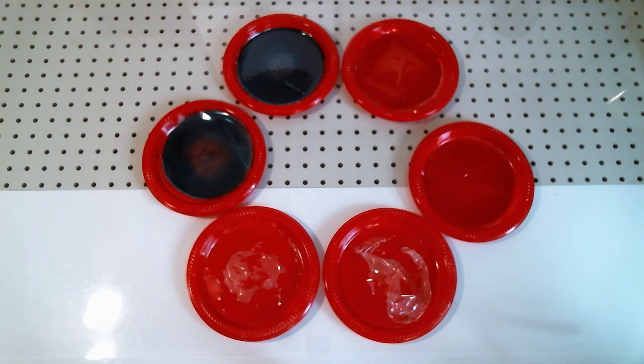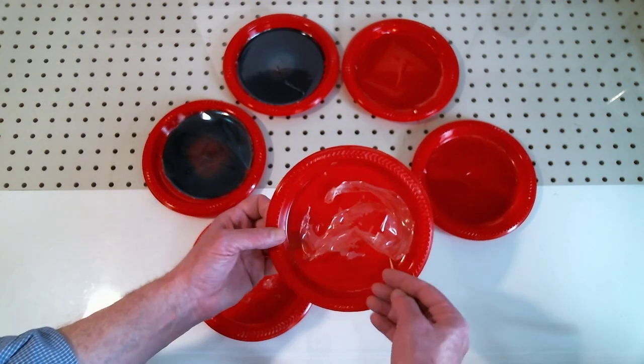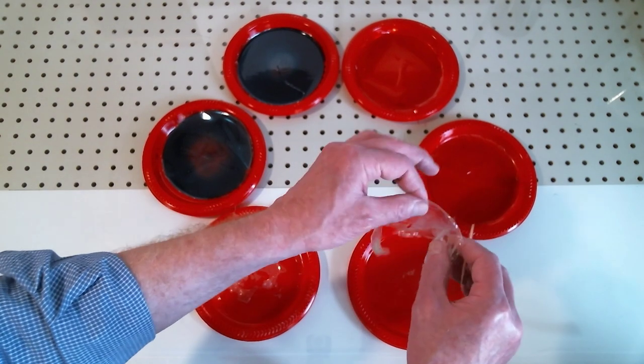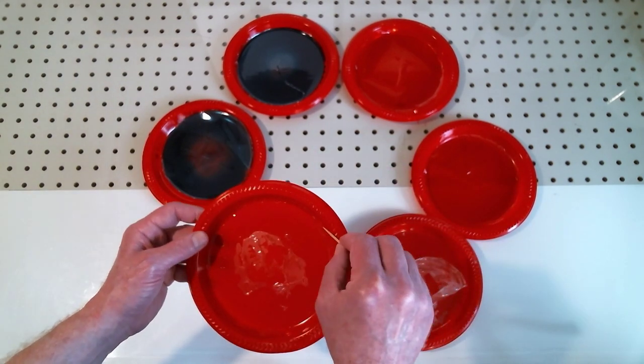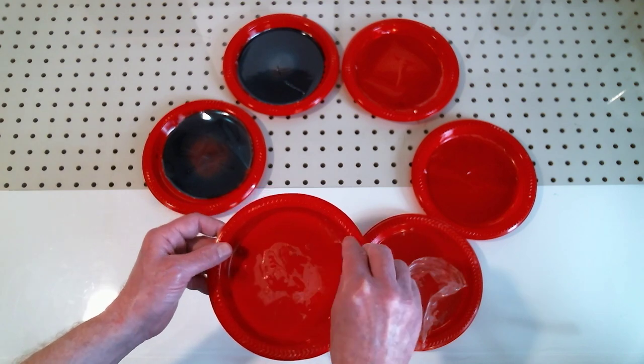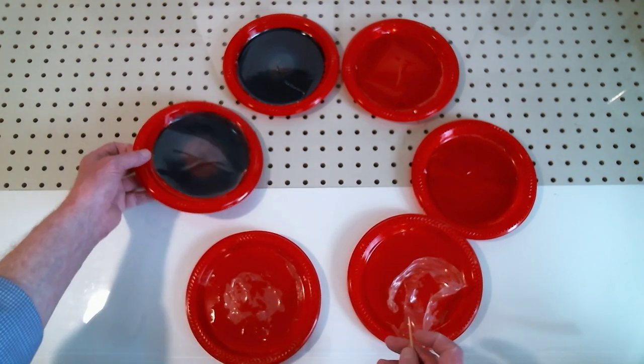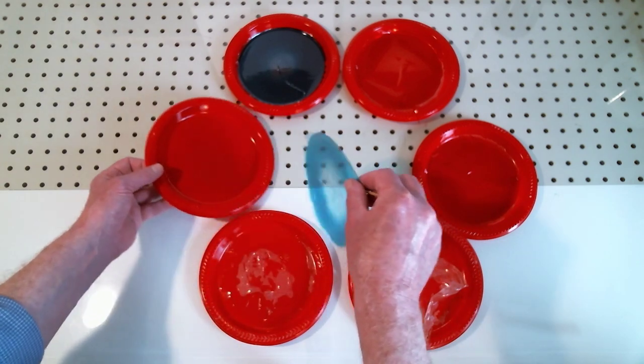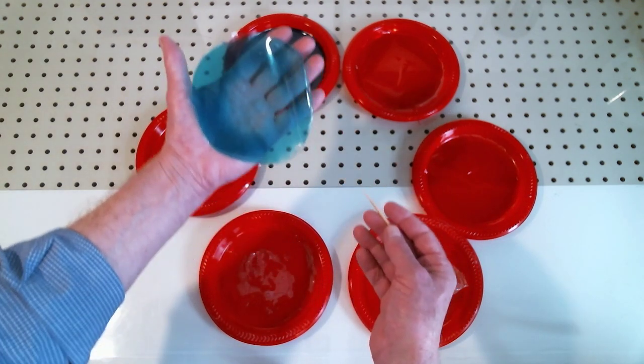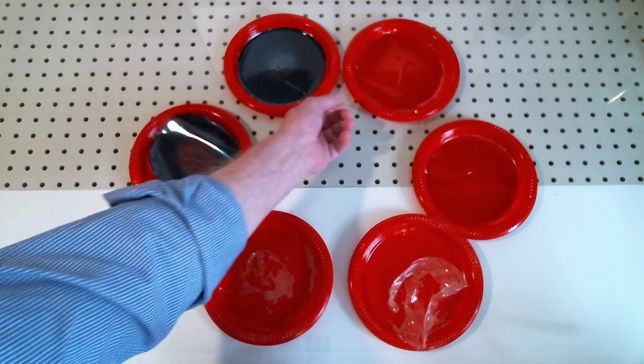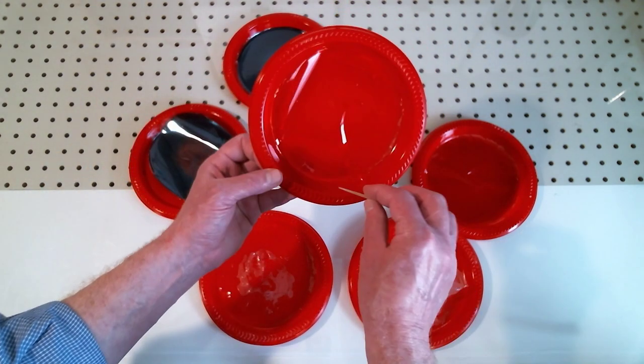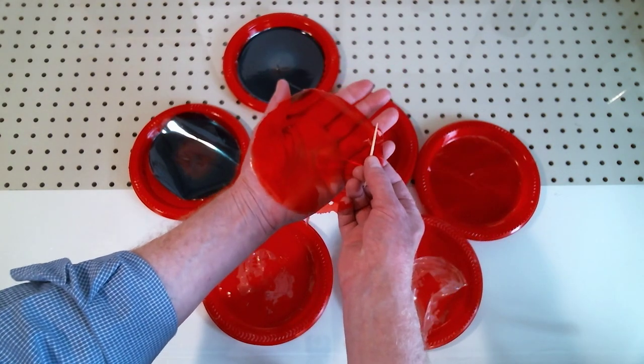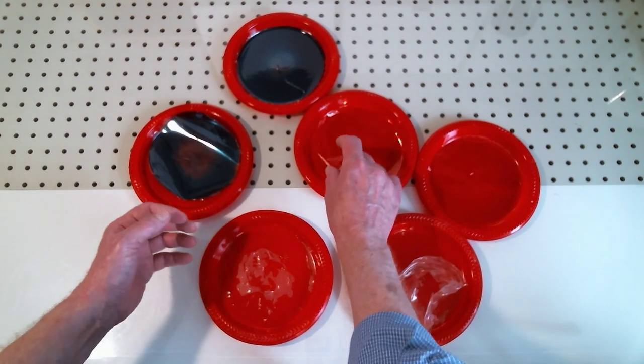Now, once it's completely dried, you simply peel it off. Here is the clear. A couple of different. And I've made some blue. Now, what I'm using is just a toothpick to peel it off, but anything that you can use to get up underneath of it is just fine. And here is the red.